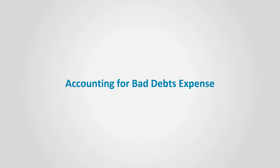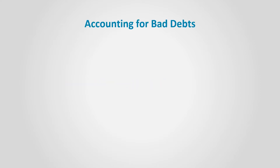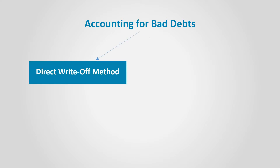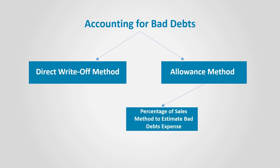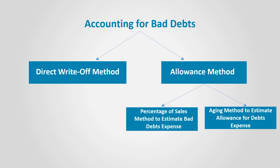Accounting for bad debts expense. There are two main methods to account for bad debts: the direct write-off method and the allowance method. The allowance method uses the percentage of sales method or the aging method to estimate bad debts expense. Please review the estimation of bad debts video to understand the difference between the two methods and how they are implemented.